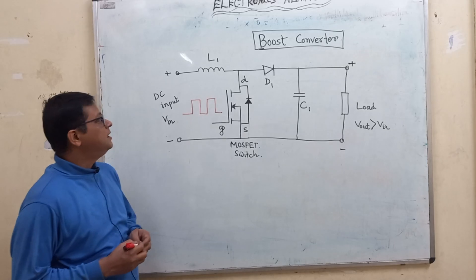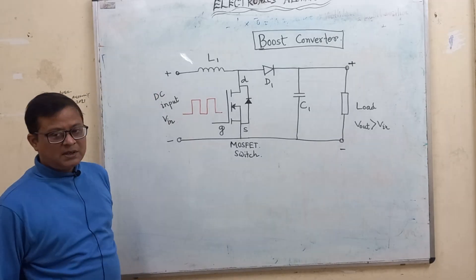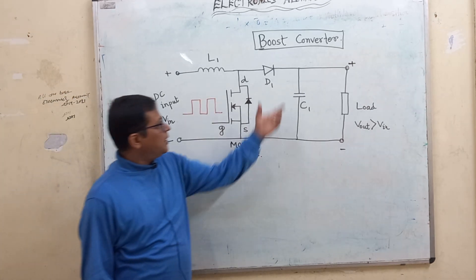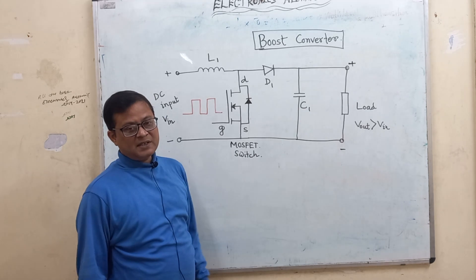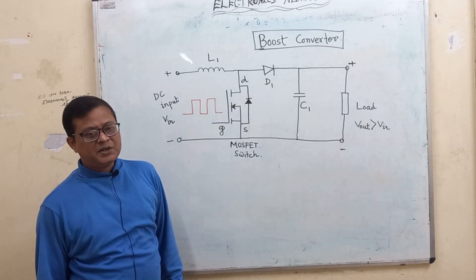Here, the DC input gives the DC input. There is a coil, a diode D1, the capacitor C1, and the MOSFET switch will be used.